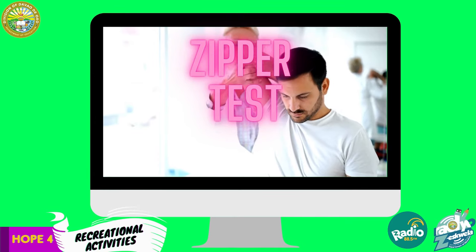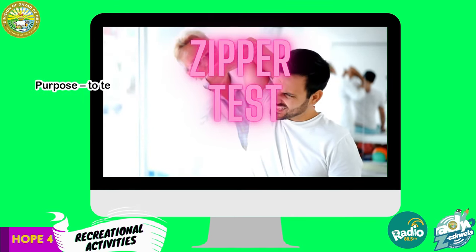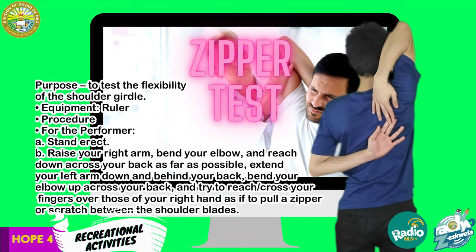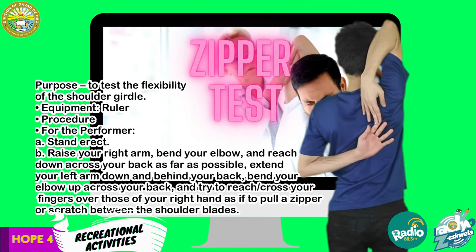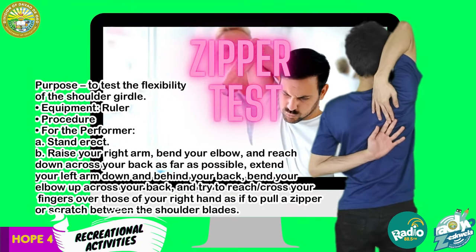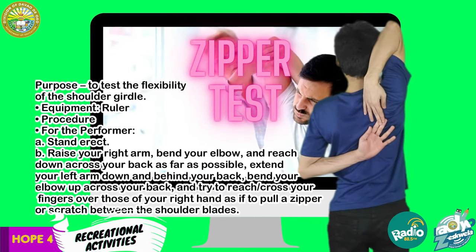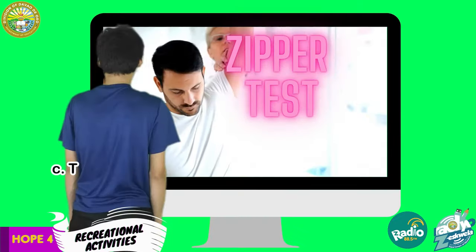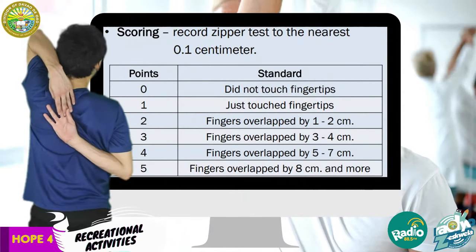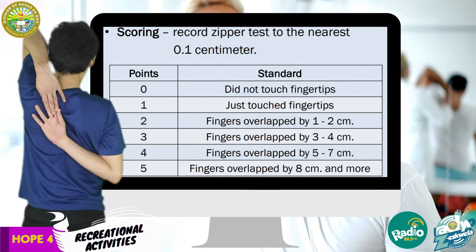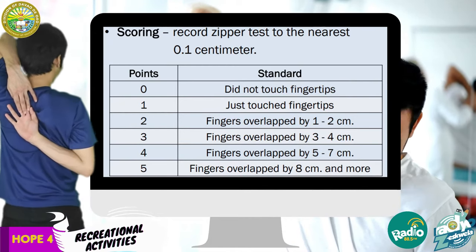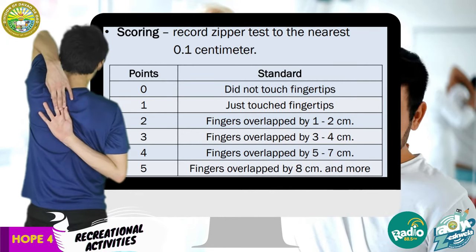Second is the zipper test. Its purpose is to test the flexibility of the shoulder girdle. Stand straight, raise the right arm, bend your elbow, and reach down across your back as far as possible. Extend your left arm down and behind your back. Bend your elbow up across your back and try to reach or cross your fingers over those of your right hand as if to pull a zipper or scratch between the shoulder blades. To test the left shoulder, repeat the procedures with the left hand over the left shoulder. Have your sibling or anyone with you observe whether the fingers touch or overlap. Measure the gap between the middle fingers of both hands and record the distance in centimeters.